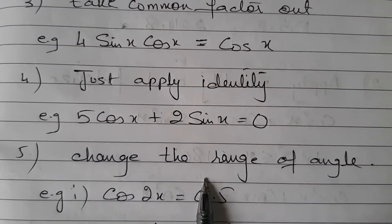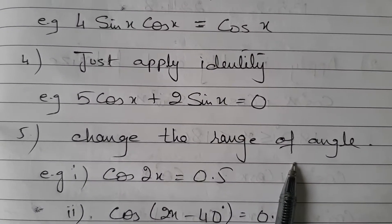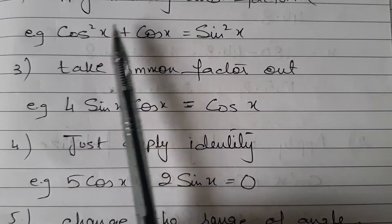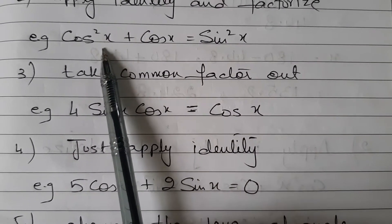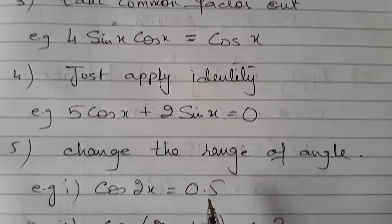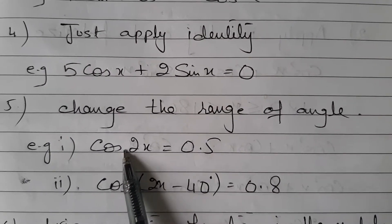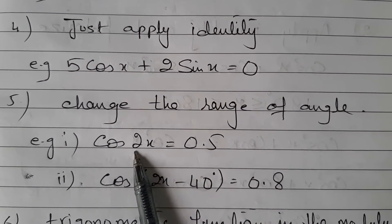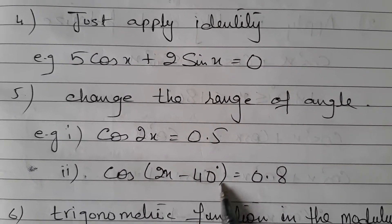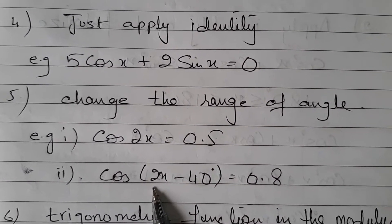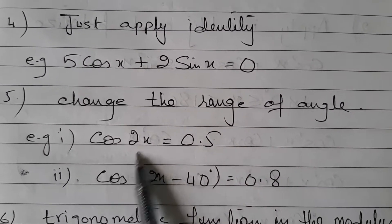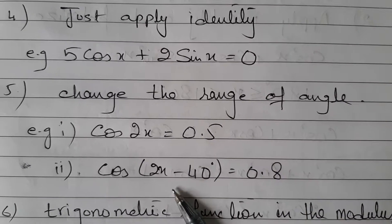Then there are cases when you have to change the range. If you notice, in all my above examples I have only the angle x — nothing multiplying with x, nothing adding with x. Whereas in these two examples, instead of x I have 2x, and here I have 2x minus 40. So the angle is not just x; it is multiplied by a number and also subtracted.